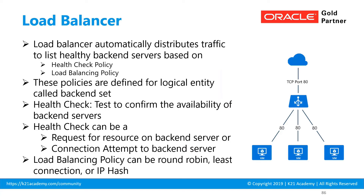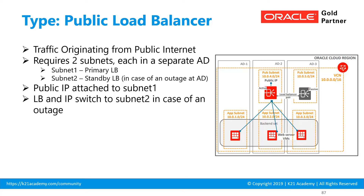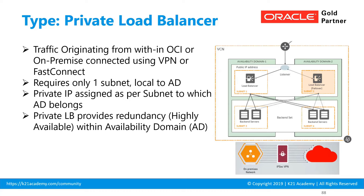If you want a highly available private load balancer, deploy two private load balancers with similar configuration across two availability domains, and then use DNS within OCI or external DNS to distribute traffic to these internal load balancers as a round-robin. To recap: a public load balancer is highly available across availability domains and requires two subnets, while a private load balancer is highly available only within an availability domain.